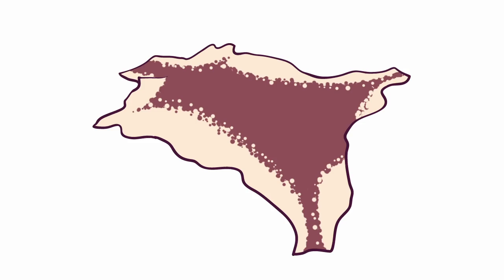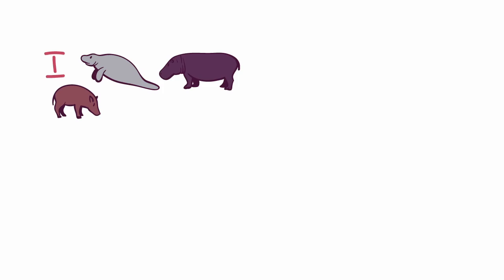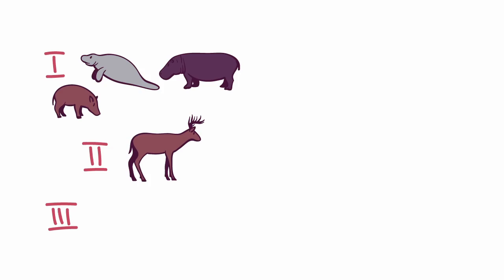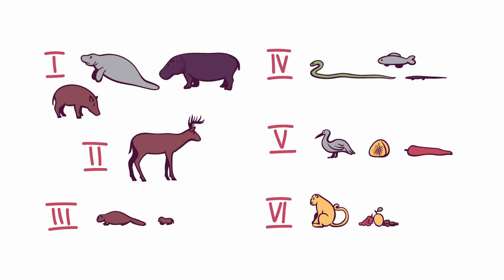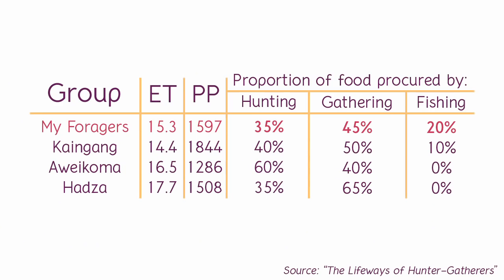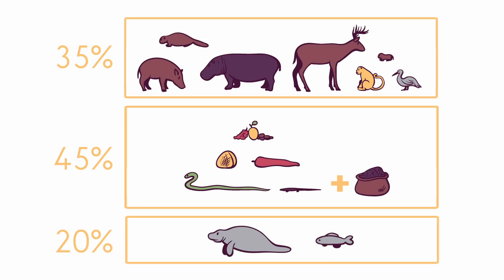The most prized foods on the menu of my foragers are the large aquatic mammals with plenty of blubber, and the wild pigs that live in the hills. The second most prized are deer. Then there are various smaller aquatic mammals, followed by snakes, lizards, and fish. Then birds, honey, and tubers. Then monkeys, berries, fruit, nuts, and cereal grains obtained through trade. Going with the proportions I established earlier, here's how it all figures into the diet.